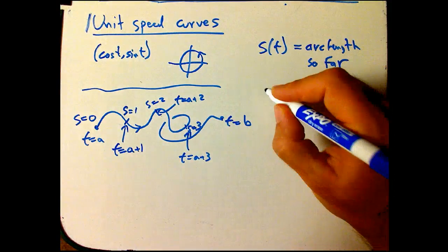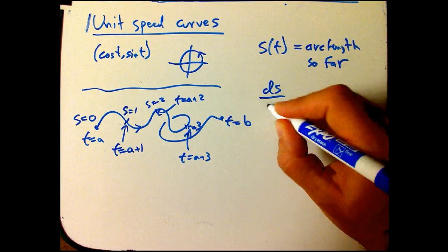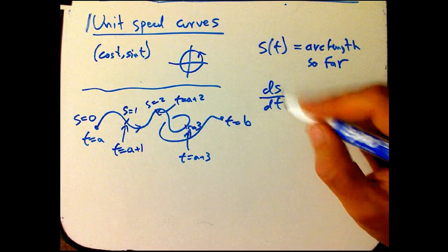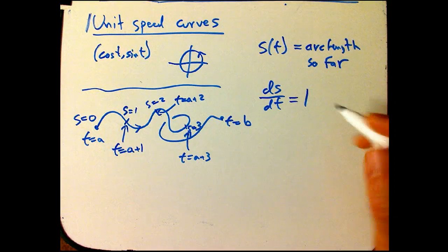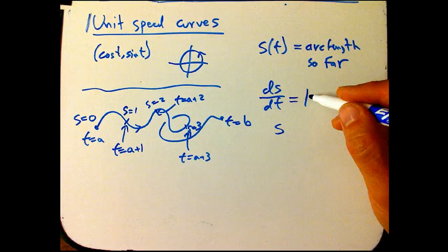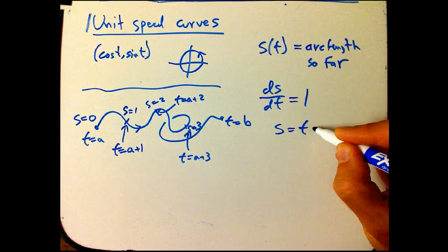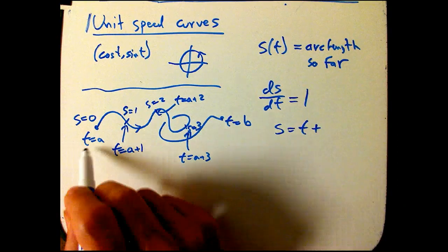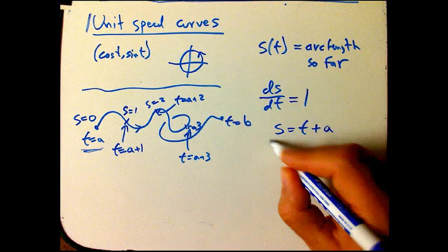Because unit speed, after all, means one way to talk about the speed is ds dt equals 1. And what's the solution to that? s is just going to be the only thing with derivative 1 is just t plus a constant. And that constant is pretty clear from here. It's just going to be t plus a.